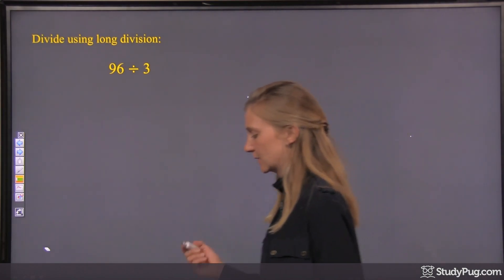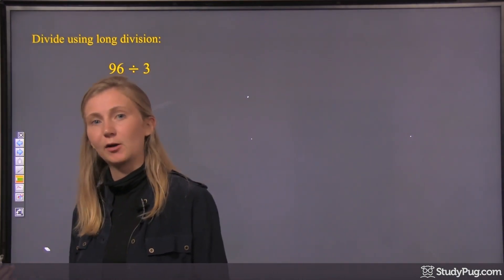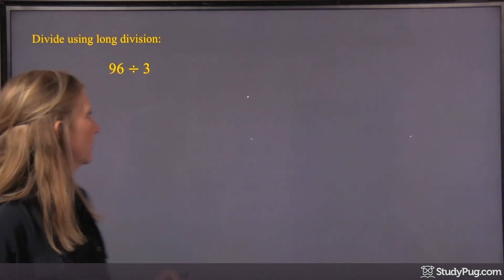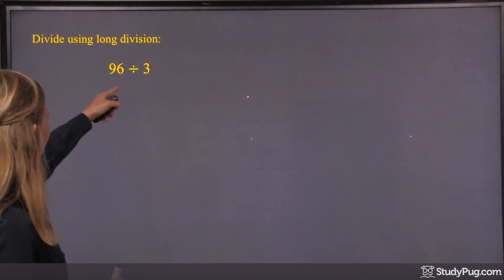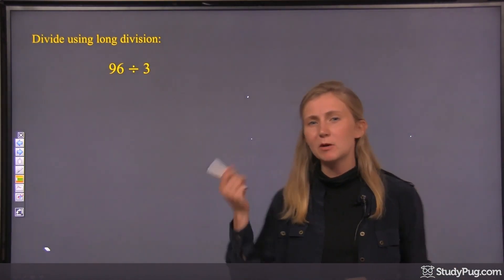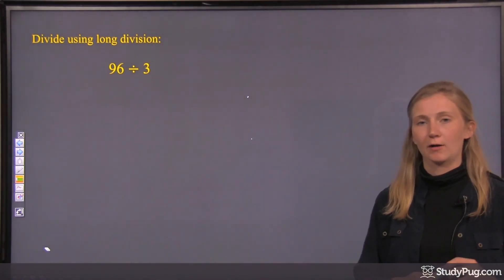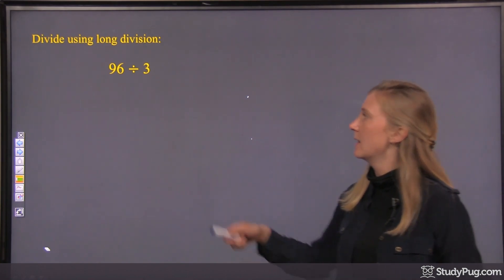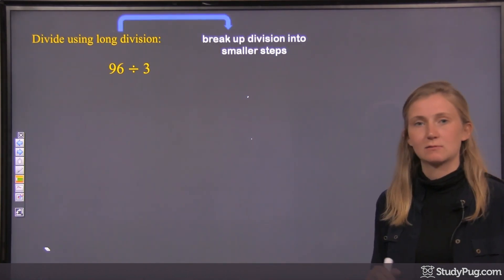So long division helps us do division when we have bigger numbers that we can't do in our head. So 96 divided by 3, 96 is a number that we don't have on our multiplication table, right? So maybe we don't know that division right off by heart. So long division helps us by breaking up the division into smaller steps.